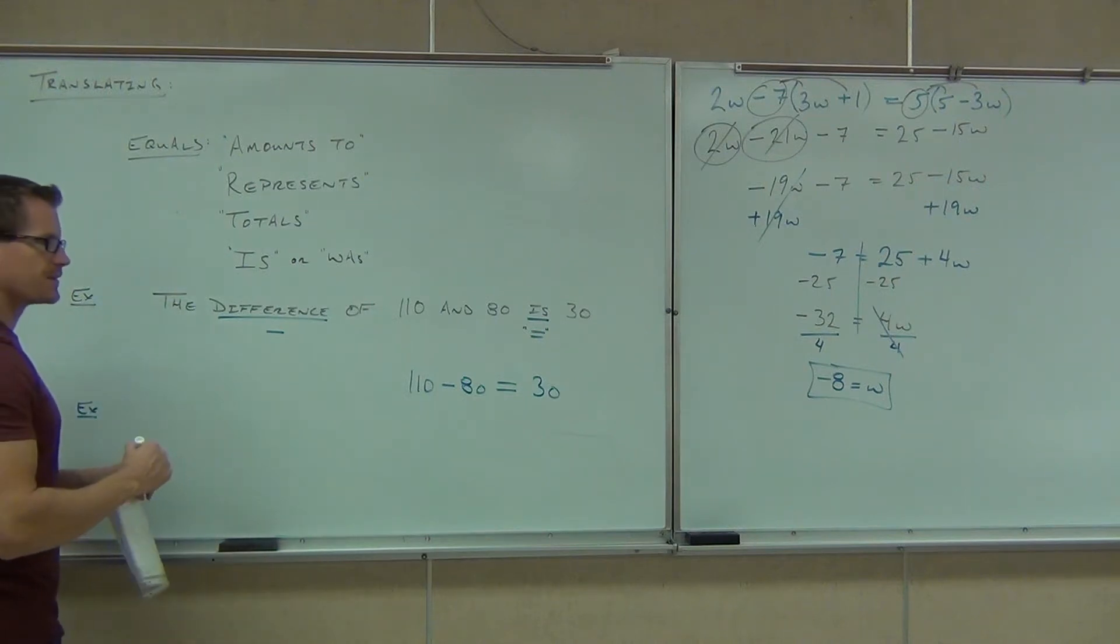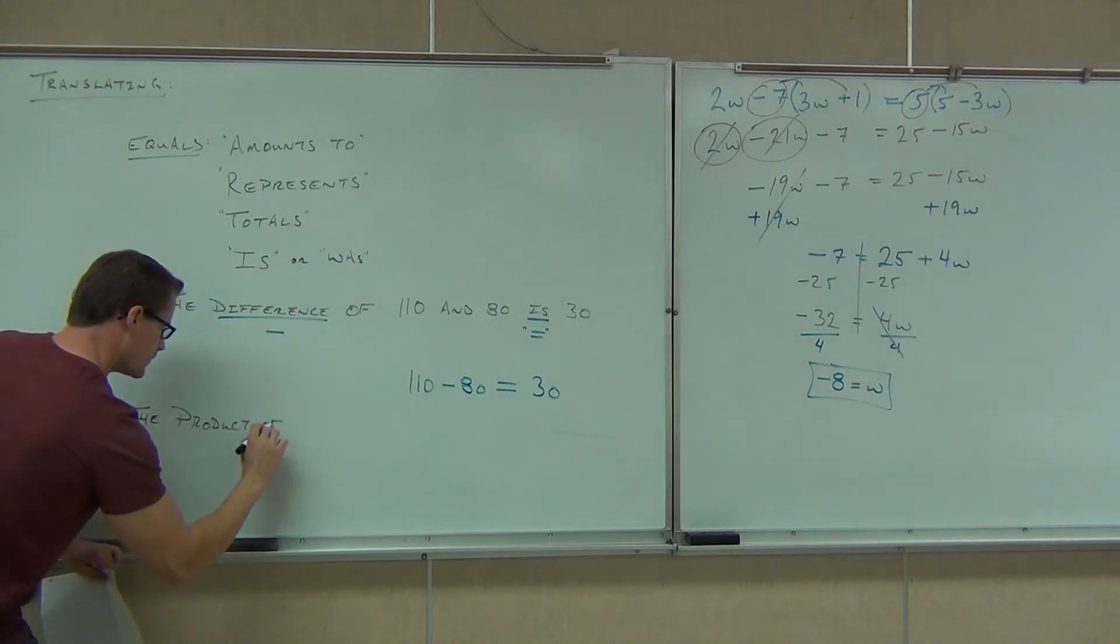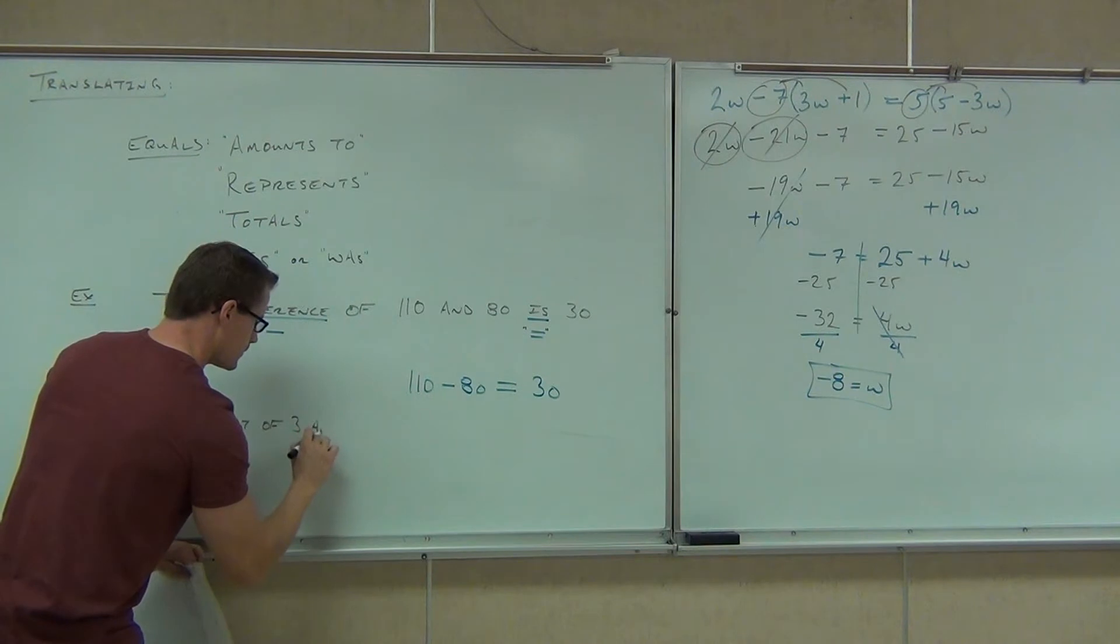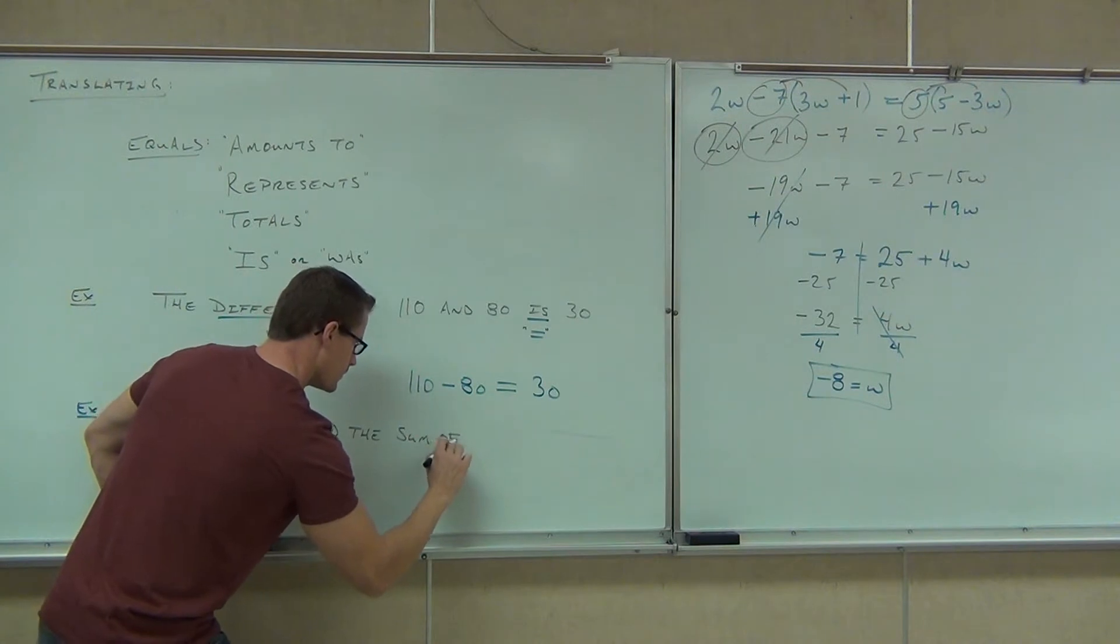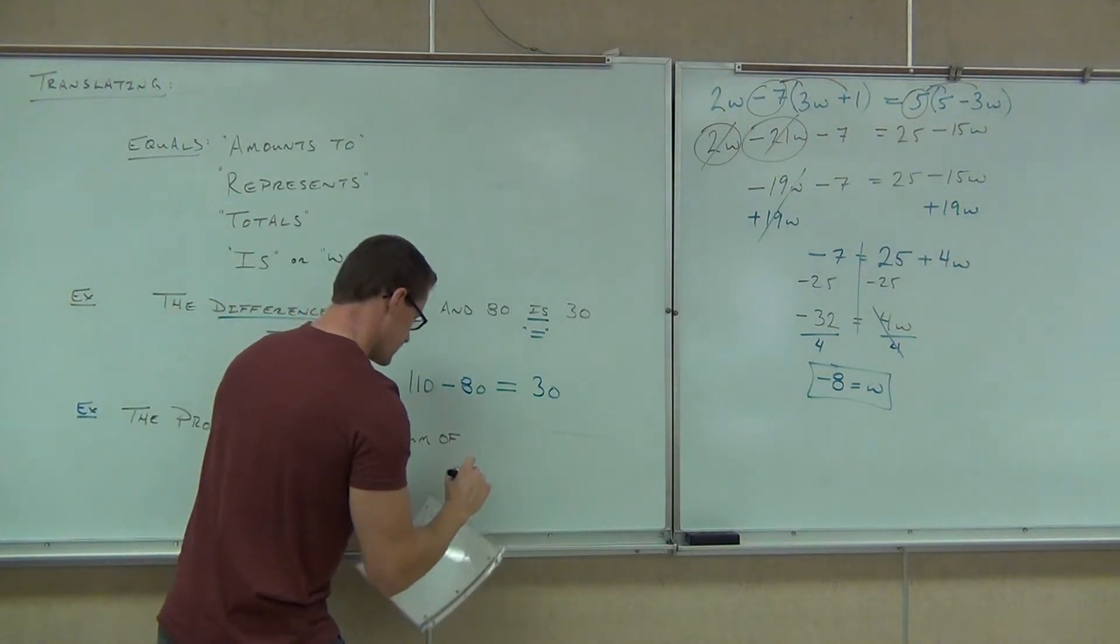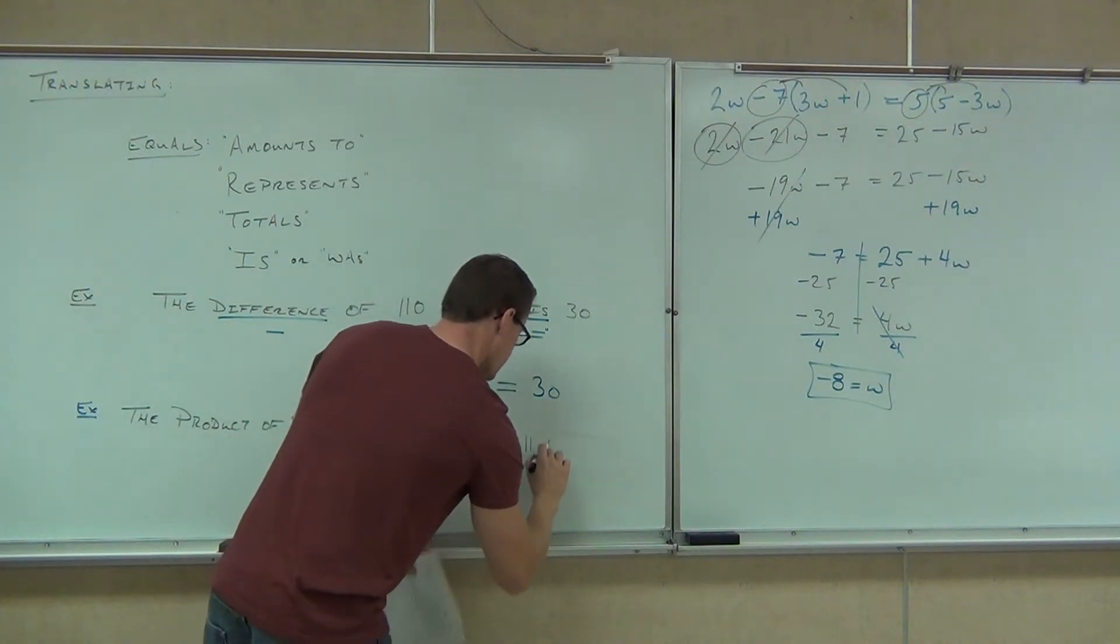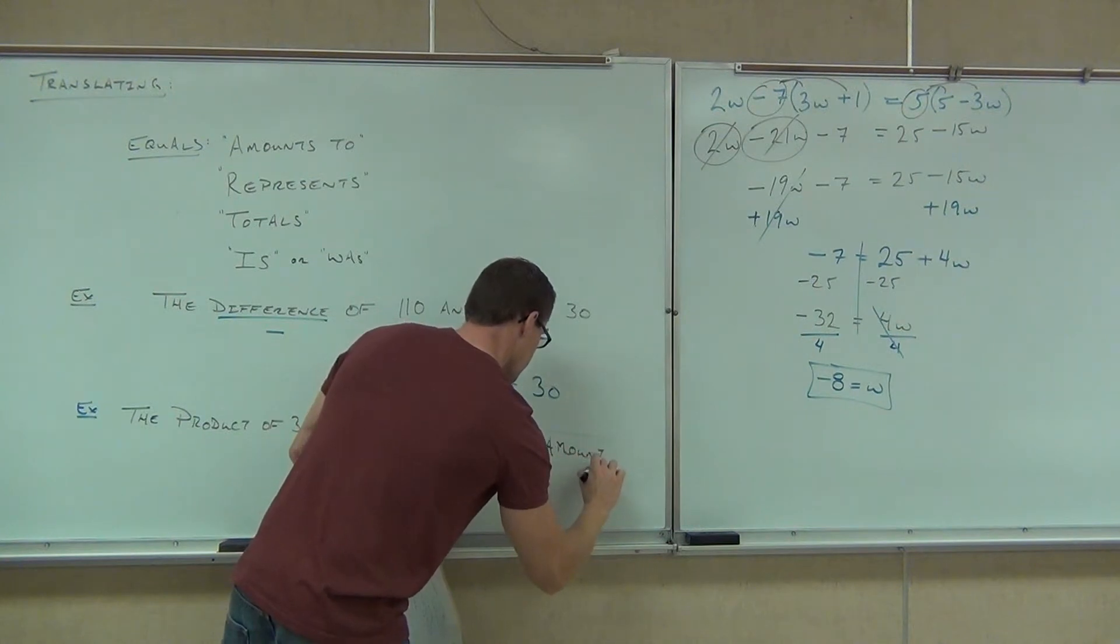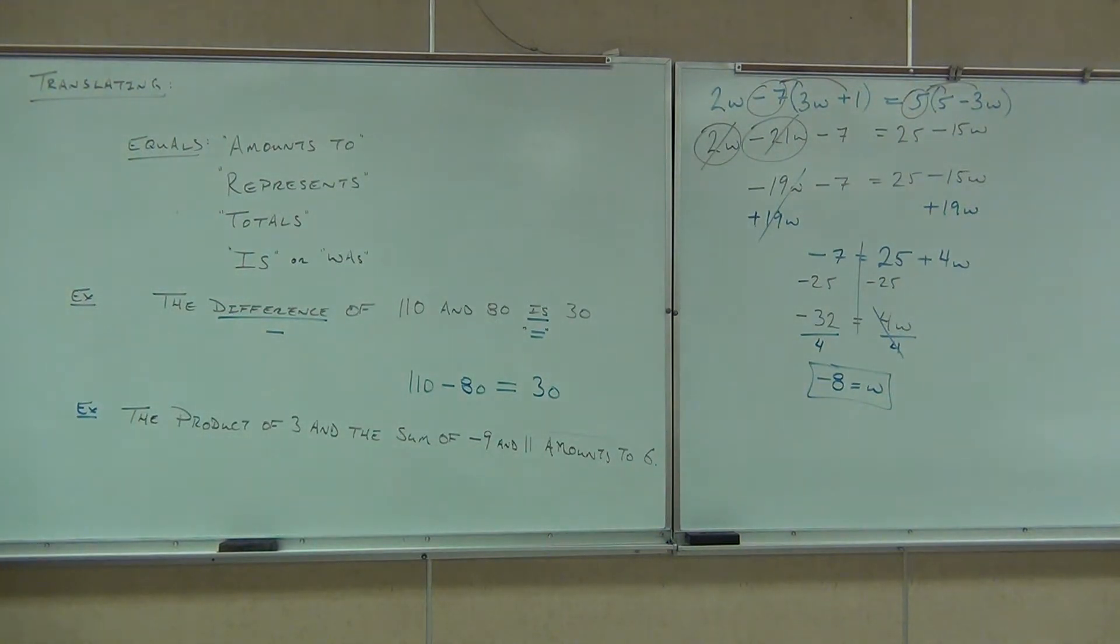Try this. The product of 3 and the sum of negative 9 and 11 amounts to 6. Go ahead and write that down.